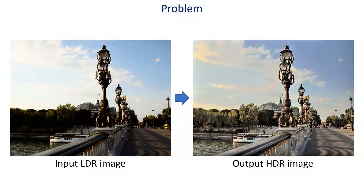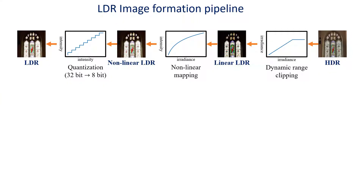Recovering an HDR image from a single LDR input image is challenging, due to missing details in under- and overexposed regions. The HDR to LDR conversion involves several nonlinear operations, including dynamic range clipping, nonlinear mapping with a camera response function, and quantization.